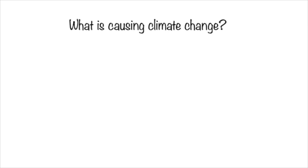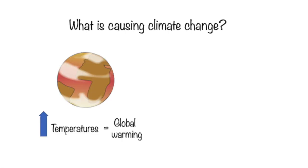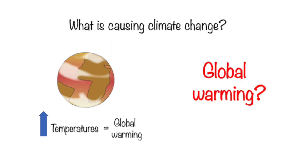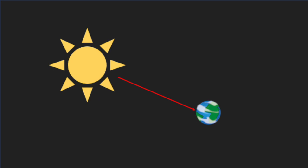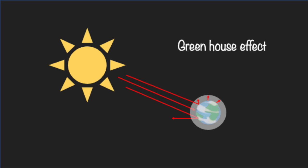We've seen that climate change refers to the bad things resulting from global warming, but what is causing global warming? The sun shines its rays down on earth. Some of these rays stay in the earth's atmosphere, but some bounce off. Greenhouse gas emissions in earth's atmosphere surround the earth, and these allow less UV rays to bounce off or escape, therefore making the earth a hotter place. This is known as the greenhouse effect, and is the cause of global warming.